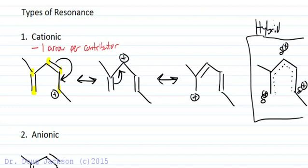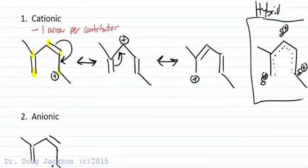Molecular orbital theory would predict that the hybrid is the structure, and none of the three contributors exist. But we can derive the hybrid from the three contributing structures.